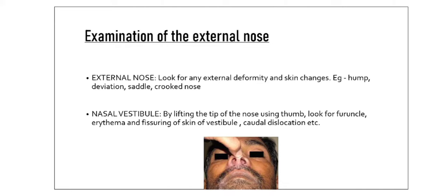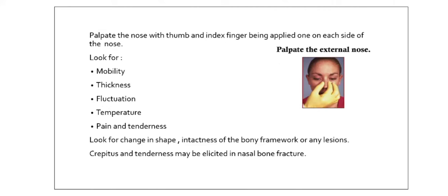Examination of the interior of the nose over the nasal vestibule: by lifting the tip of the nose using the thumb, you look for any furuncle — furuncle means any boil of the hair follicles — erythema, which is skin redness, fissuring of the skin and skin of the vestibule, which are abrasions, and caudal dislocation in the anterior tip of the nasal septum.